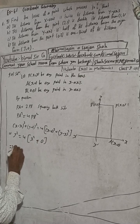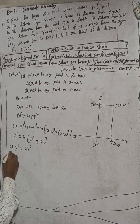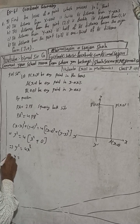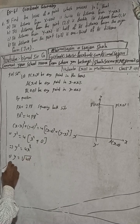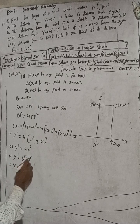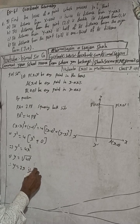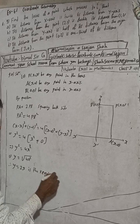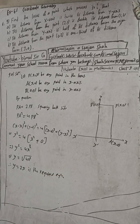Therefore y² = 4x², which gives y = √(4x²), so y = 2x. This is the required equation and the solution to the problem.